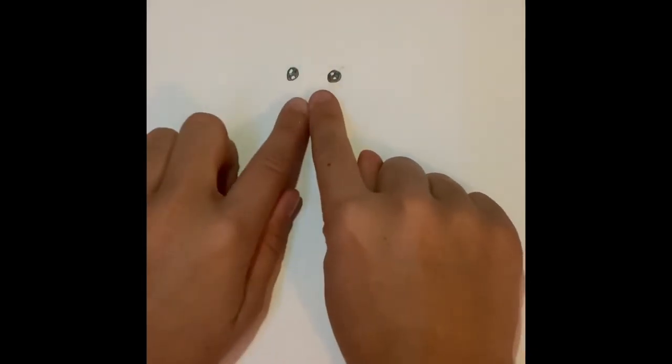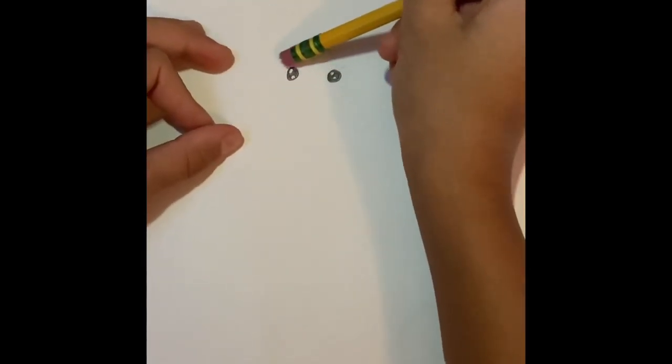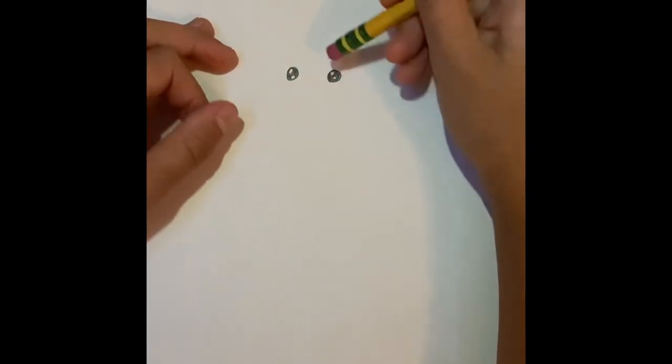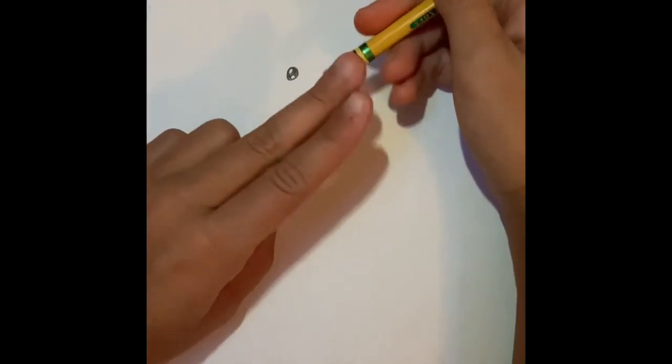So the first thing you're going to draw is the eyes. I already did the eyes, but how you draw them is you would draw a circle, and then another circle, and then you draw two little circles, and then color the outside of the circles. So let's get to the next thing.